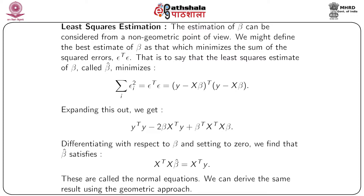Looking at the algebra behind least square estimation, the estimation of β can be considered from a non-geometric point of view. We define the best estimate of β as that which minimizes the sum of squared errors. In vector notation, we minimize ε'ε — the least square estimate β̂ minimizes ε'ε, which equals Σᵢ εᵢ². In the regression model y = Xβ + ε, we write ε = y − Xβ, so the least square error is (y − Xβ)'(y − Xβ). Expanding the right-hand side gives y'y − 2β'X'y + β'X'Xβ.